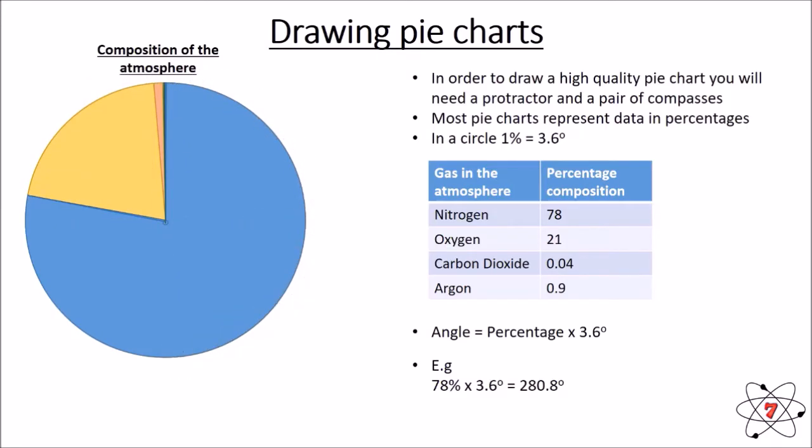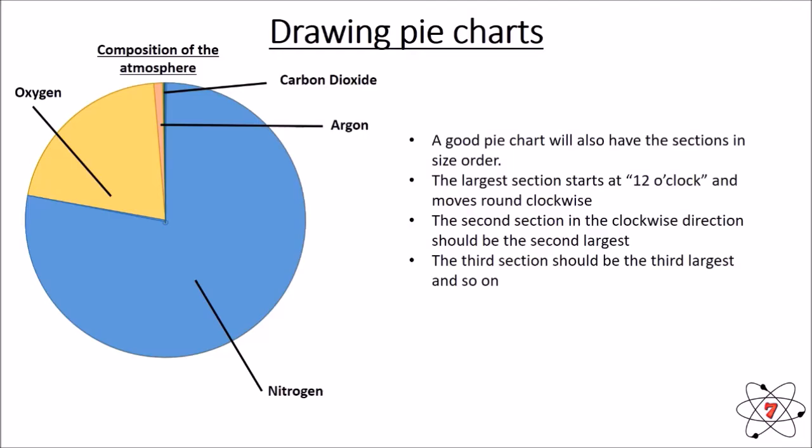Now that we have our pie chart completed, we need to label the different sections of the pie. What we'll also notice is that a good pie chart has the sections in size order. The largest section starts at 12 o'clock, so vertical, and moves round clockwise. The second largest section should be the second section clockwise, and so on. So, we go from biggest to smallest going in a clockwise direction.